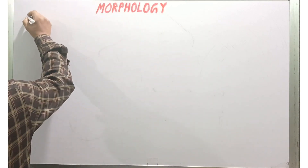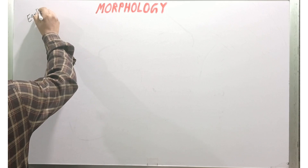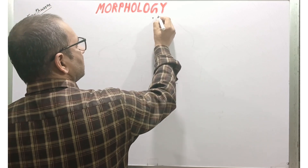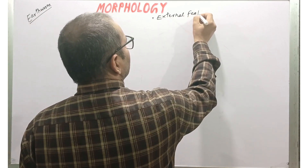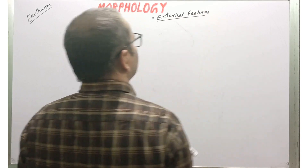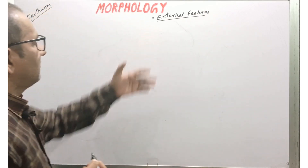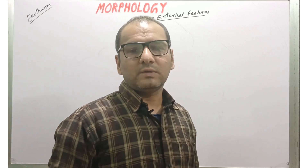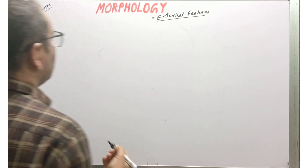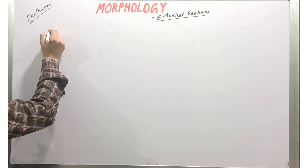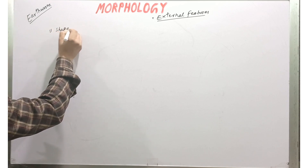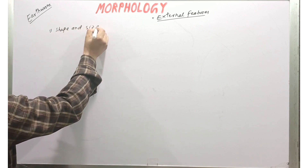Today we discuss the Morphology of Earthworm. Morphology refers to external features — all the things which are visible from outside in the body of the earthworm. We study morphology under the following headings: shape and size, color, segmentation, head, clitellum, setae, and apertures of the body surface.